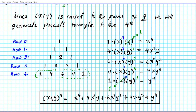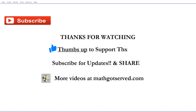Something to keep in mind is the behavior of the signs as they relate to the operation between the terms in the binomial. If you have a plus, all your signs will be pluses. But if you have a minus, you'll have an alternation in the signs. In the next presentation we'll deal with a minus scenario, and you can observe how the signs behave when you have a difference between the two terms.